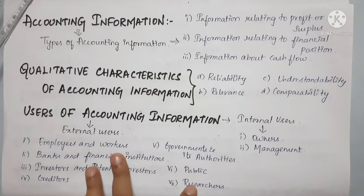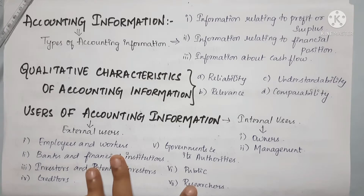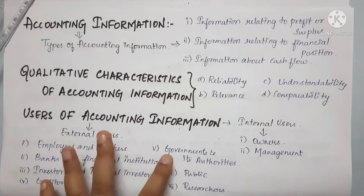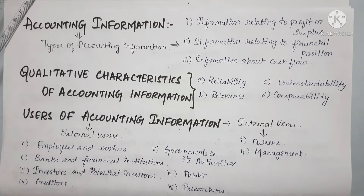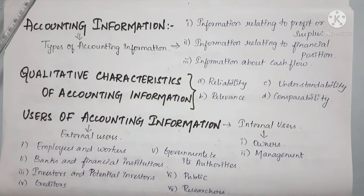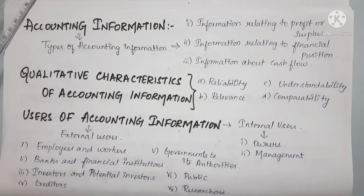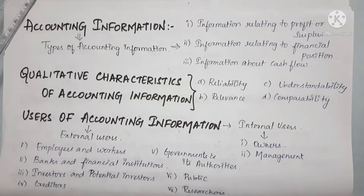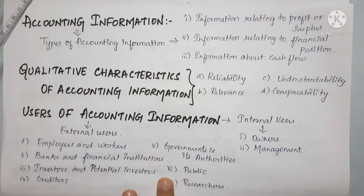Accounting information. We have already discussed the information system. In accounting, we will collect financial data, then record, classify, and summarize it, and then communicate with users. This is the accounting information activity.